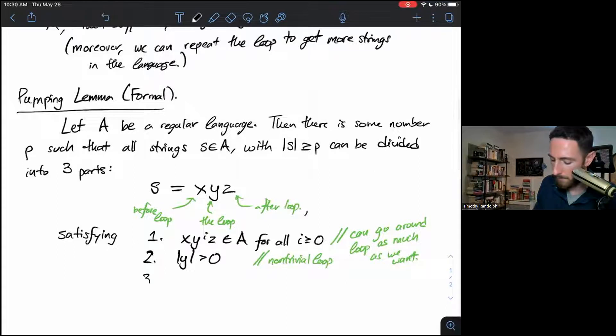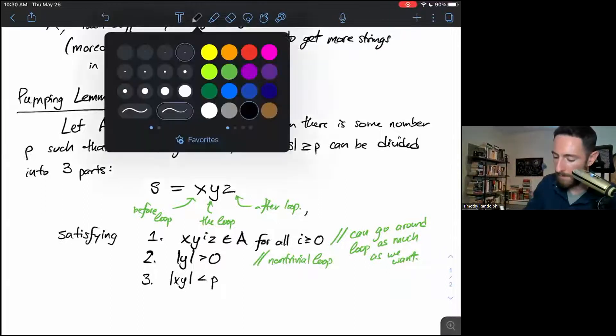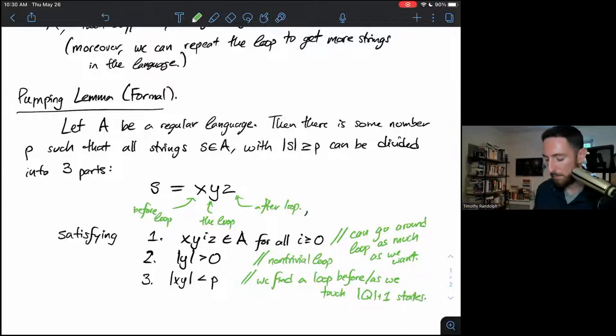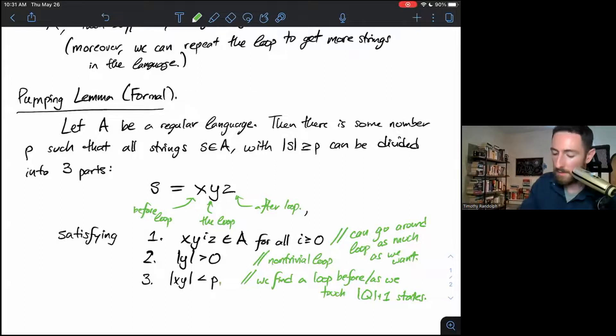And third, we have X, Y is less than P. And what this will mean in practice is we find a loop before or as we touch Q plus one states. So X, Y less than P. You can essentially think of P as being the number of states in our DFA. And condition three of loopiness just says, if we're wandering along the execution of our long accepting string, certainly by the time we've seen Q plus one states, we've seen some state twice.